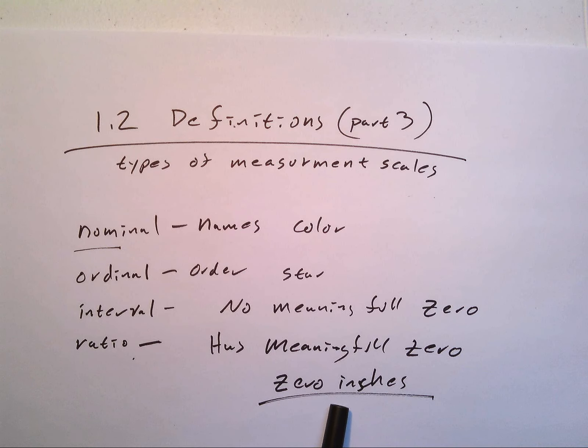And lastly you have ratio where the zero is meaningful. Think about measurements that you take that you can't go below zero. Height - something has a height or it doesn't exist.